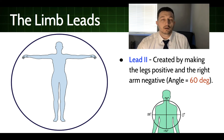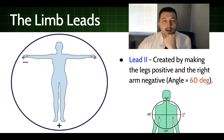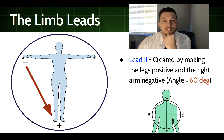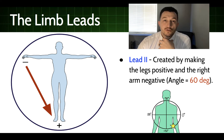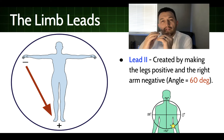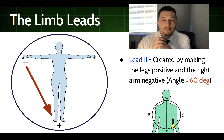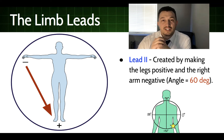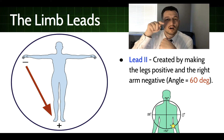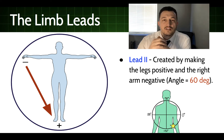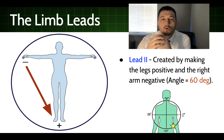Lead 2 is created by making both legs positive and the right arm negative, giving an angle of orientation of positive 60 degrees. Lead 2 is an important lead — we often use it for determining the patient's rhythm because it gives us that classic nice P wave, QRS complex, and positive T wave, essentially recording from the patient's left hip at a positive 60 degree orientation.